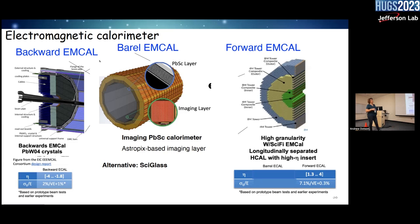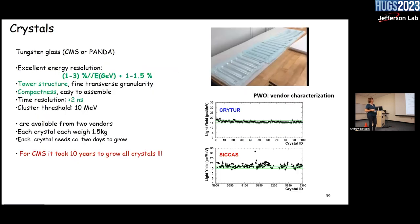For the barrel, we recently reviewed the options and decided to use imaging calorimeters — absorbers with scintillating fibers and imaging layers based on AstroPix detectors — giving very high position information about how the cluster develops. For the forward EMCal, combined with HCal, we plan to use a Sci-Fi (scintillating fiber) technology. For the electron endcap crystals, we are in the process of choosing which vendor to use for purchasing, as growing each crystal takes about two days and CMS took almost 10 years to grow their crystals.